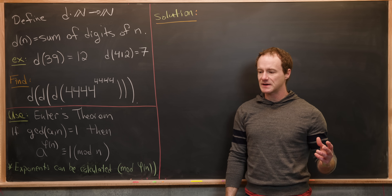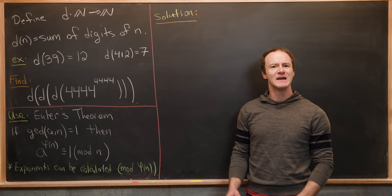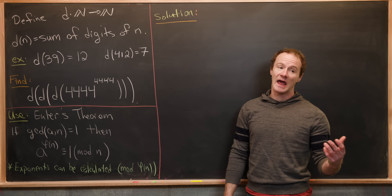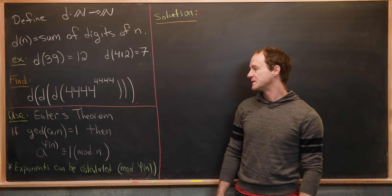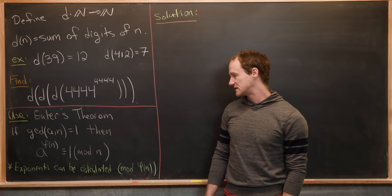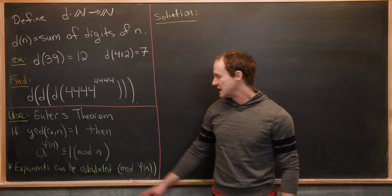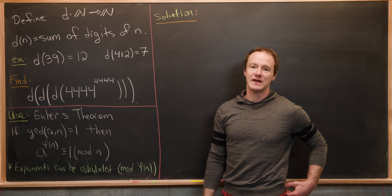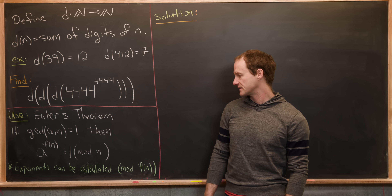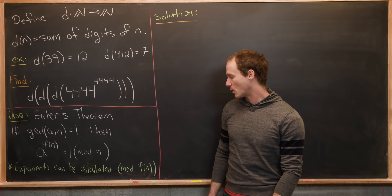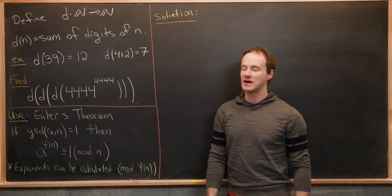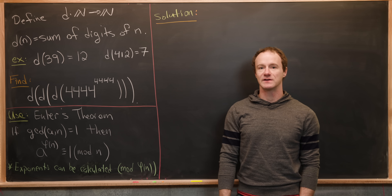We're going to use Euler's theorem, sometimes called Euler's generalization of Fermat's little theorem. We won't review it in complete detail — there are other videos and a proof in the number theory playlist. That theorem says: if gcd(a, n) = 1, i.e. they are relatively prime, then a^φ(n) ≡ 1 mod n, where φ(n) is Euler's totient function, counting numbers between 1 and n relatively prime to n. The key takeaway is that exponents can be reduced mod φ(n), as long as the base is relatively prime to n.